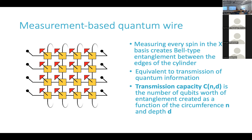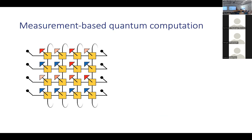An important definition for this talk is the transmission capacity of the resource state: an integer C(N, D) — the number of qubits of entanglement as a function of circumference N and depth D.